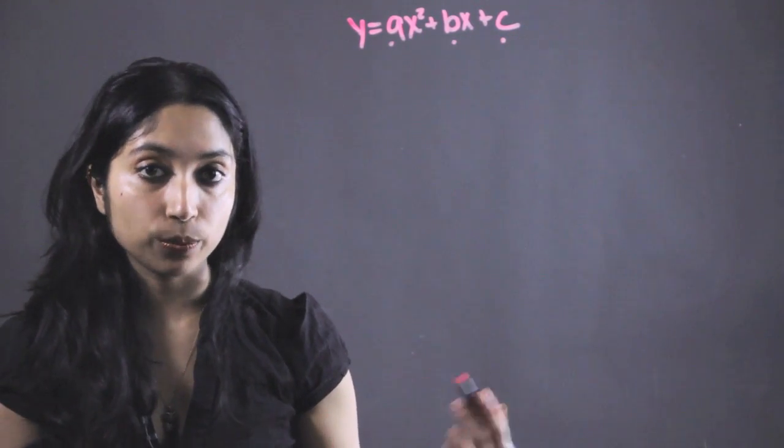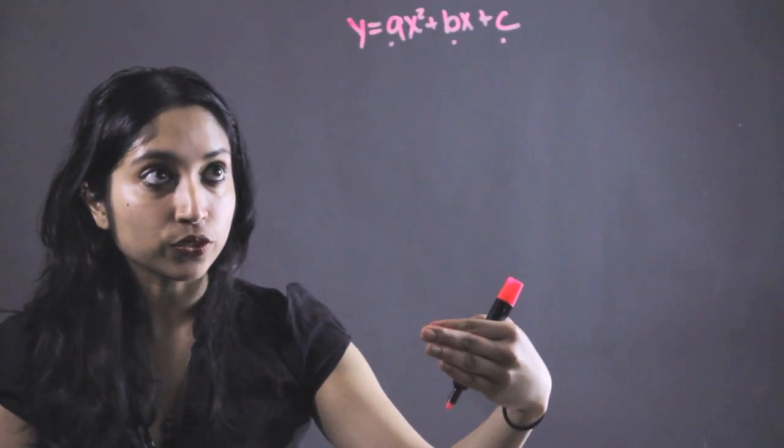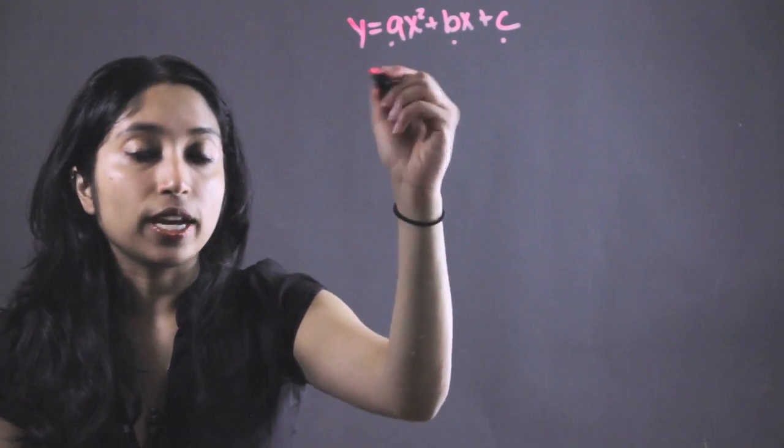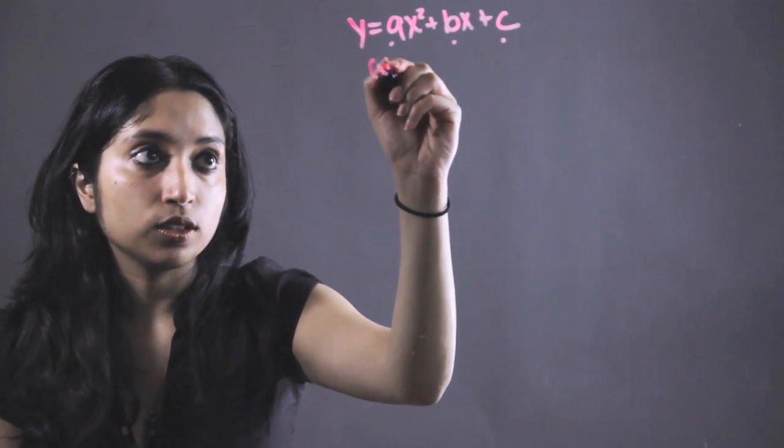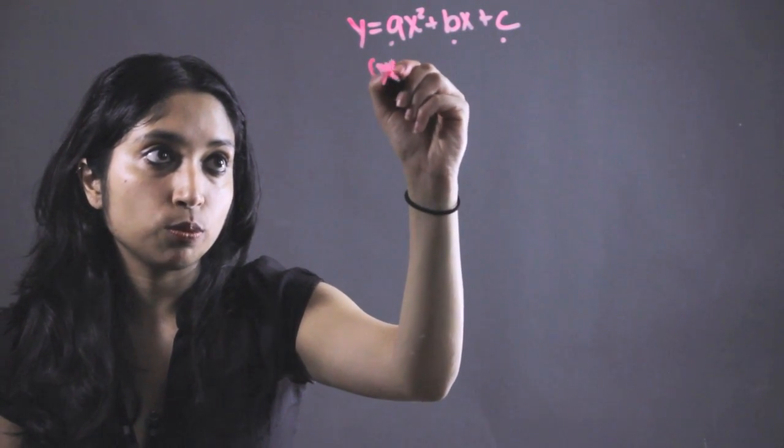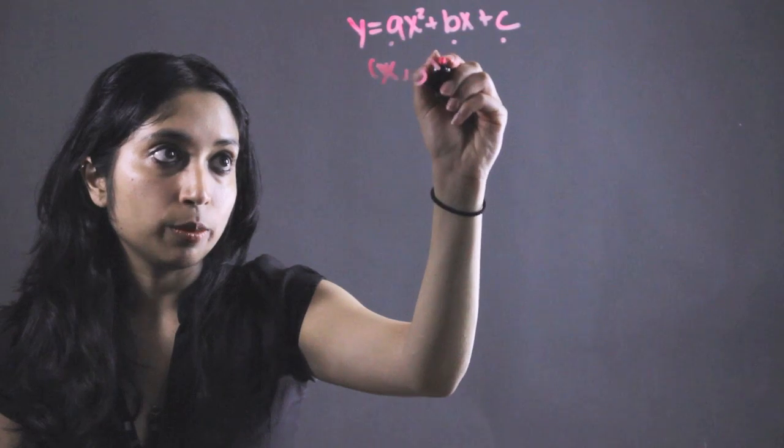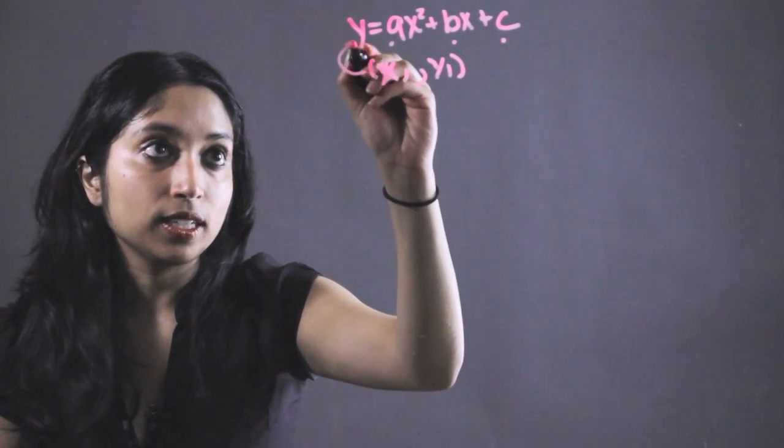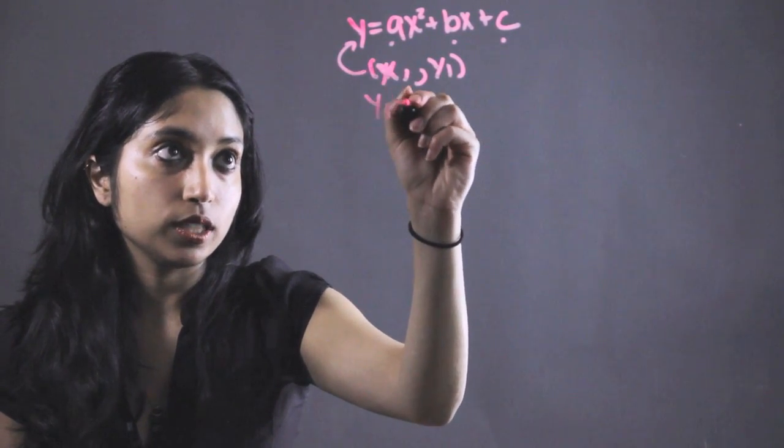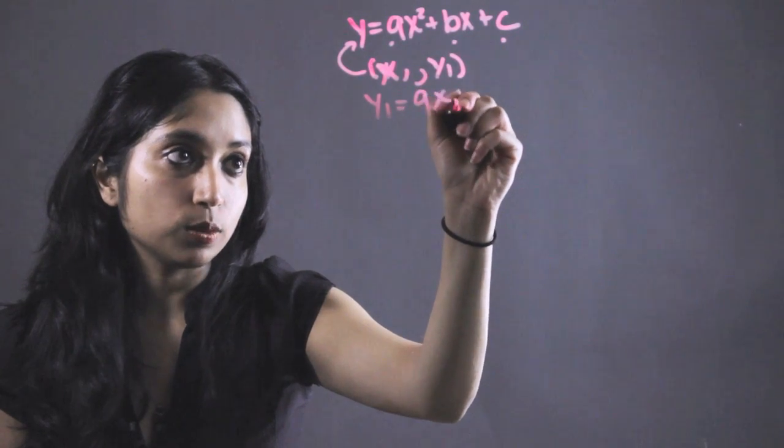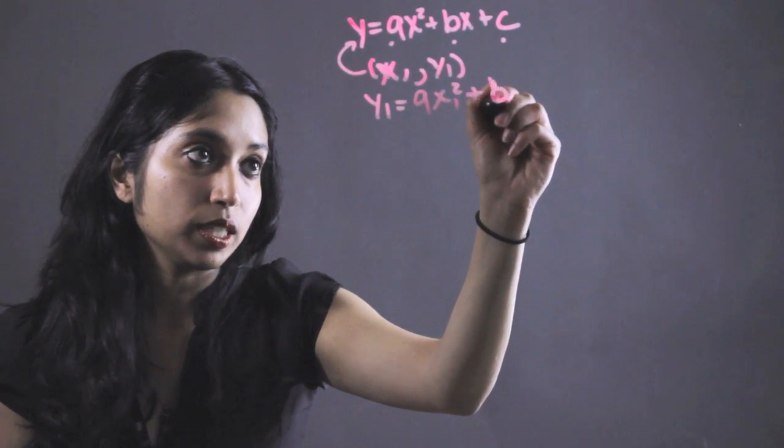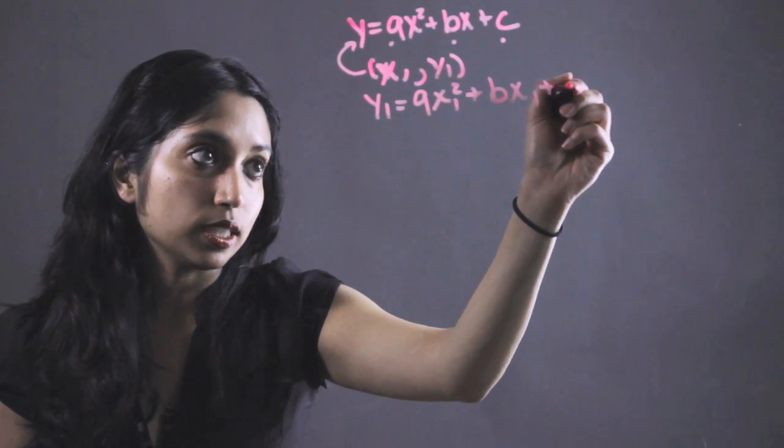To solve for three unknowns we need three equations. And we can get an equation every time someone gives us a point that's on this quadratic equation. So say someone gives us a point x1, y1, we would just plug this back into here and we would get an equation: y1 equals ax1 squared plus bx1 plus c.